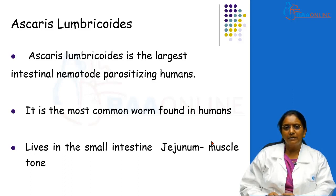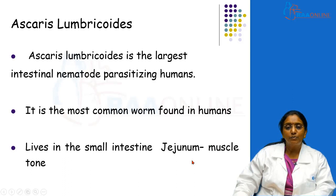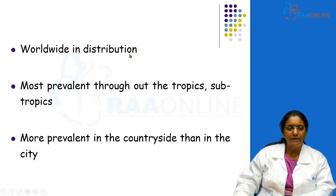Ascaris lumbricoides belongs to the category of nematodes and incidentally it is the largest intestinal nematode which parasitizes human beings. This Ascaris is a very common worm infestation found in human beings. It lives in the small intestine — the habitat is the jejunum of man — and it maintains its position there by means of muscle tone. This infection is worldwide in distribution but is more prevalent in the tropics and subtropical areas, and more prevalent in the countryside than in the city.